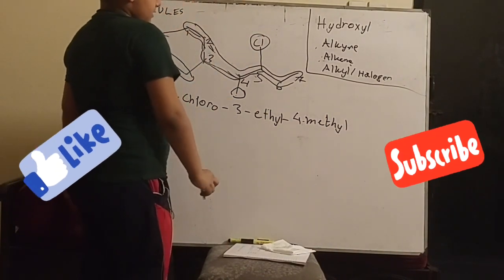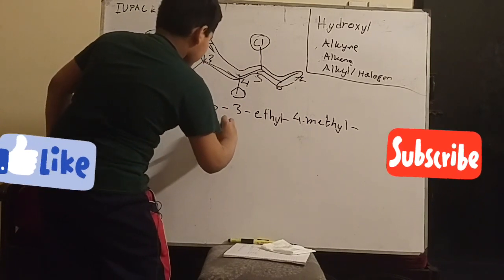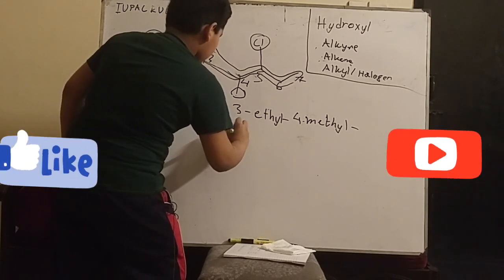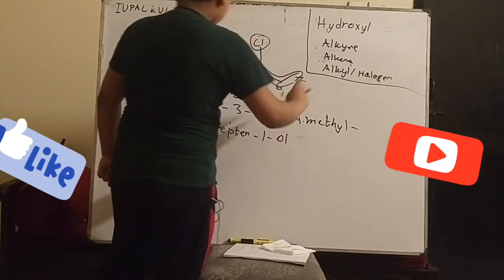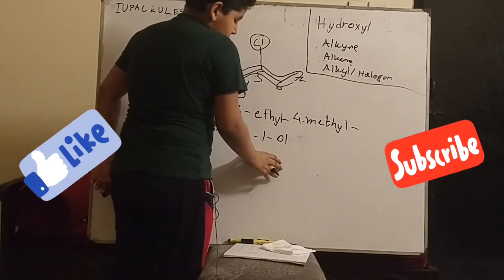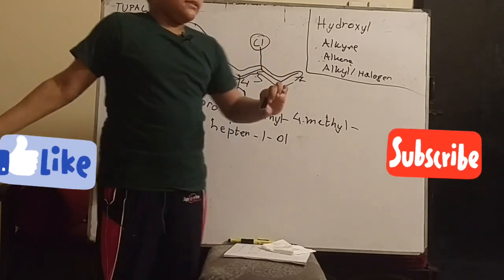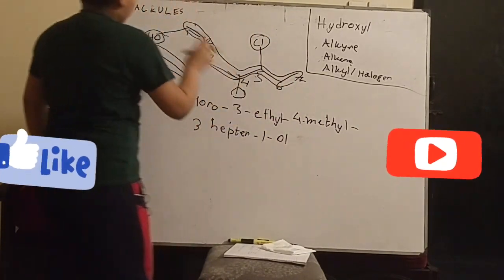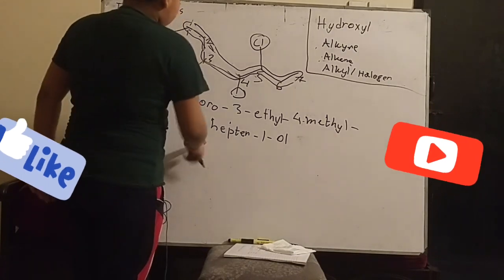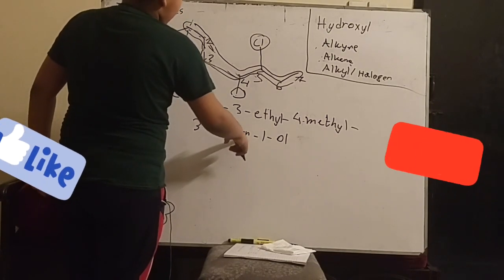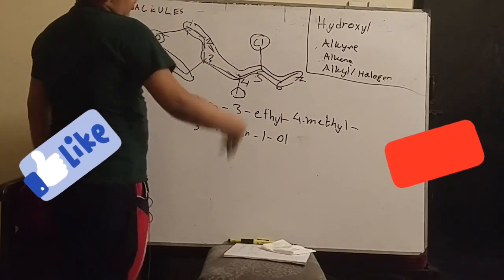Here we have to do a special case, that is to write 3-hepten-1-ol. It might look strange, but we're representing the hepten, meaning we're telling that yes, this is a heptene. And the 'ol' represents the alcohol in carbon 1. And the 3-hepten - the last 'e' gets replaced by the hyphen to ensure that there is also an alcohol here.